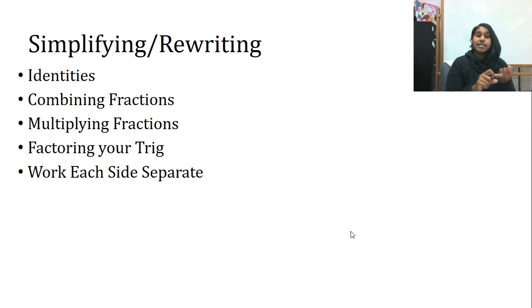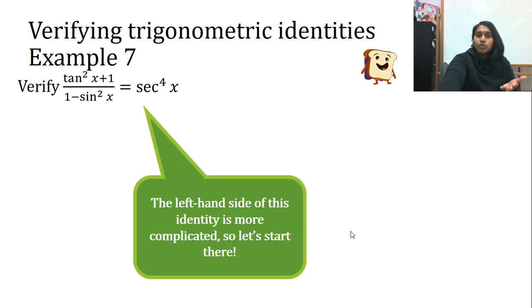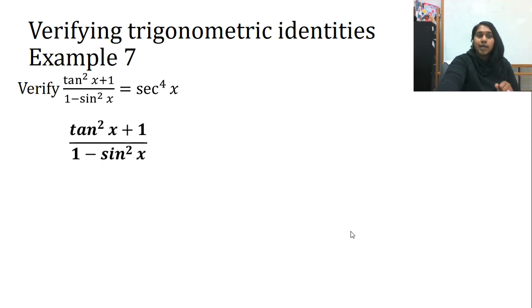You're going to see just basic identities, what happens when you combine, multiply, factor, and working each side separate. So here I have tan squared x plus one over one... So I am trying to prove that all of this equals secant to the fourth. I want to start with the harder side. So the left-hand side looks way more complicated than the right.